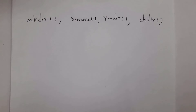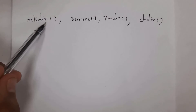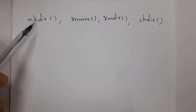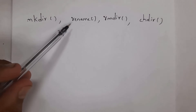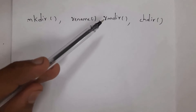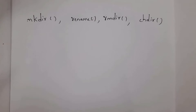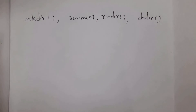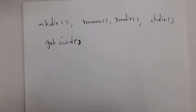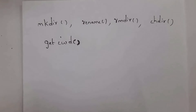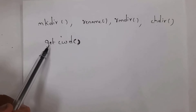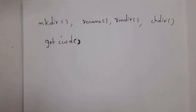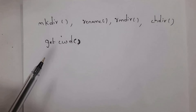These are the various functions available in the os module. The first one is mkdir — make directory — used to create a folder. Next is rename, used to rename a folder. Then rmdir — remove directory — used to remove a folder. Next is chdir — change directory — used to change the location where a file is saved. Finally, getcwd — get current working directory — displays the location where your file will be saved.